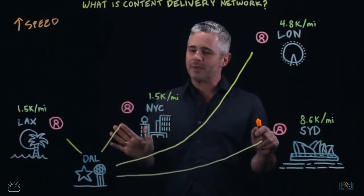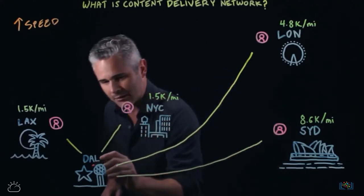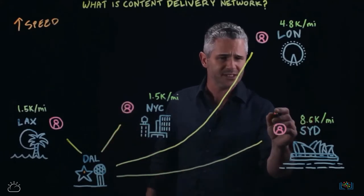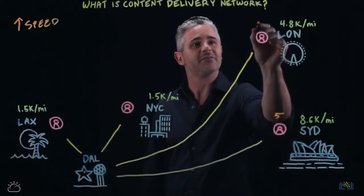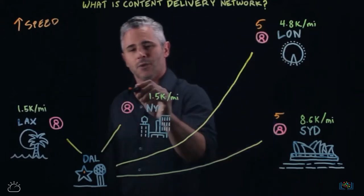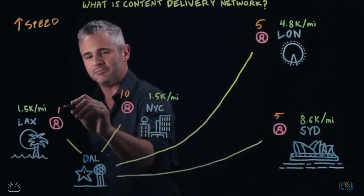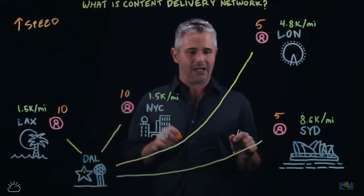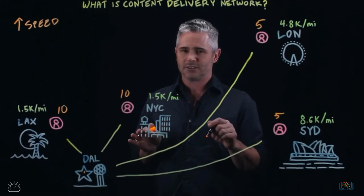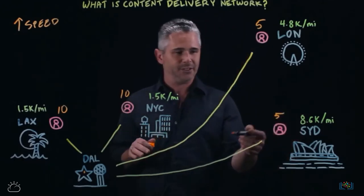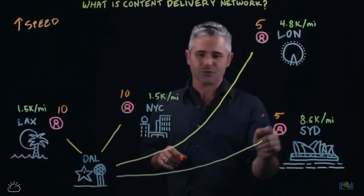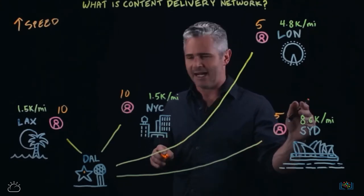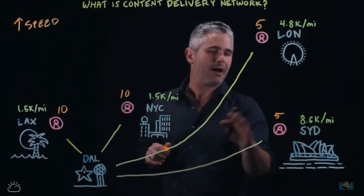I've got a simple diagram here showing a server hosted down in Dallas — this is my website — and then I have users all around the world: five in Sydney, five in London, ten in New York, ten in LA. So I've got 30 users around the world accessing my server in Dallas. Let's follow the users in Sydney: they make a request to the website and they've got an 8,600-mile trip to Dallas and 8,600 miles back.